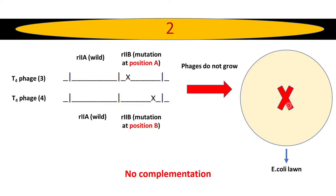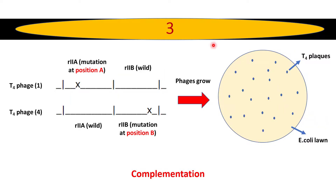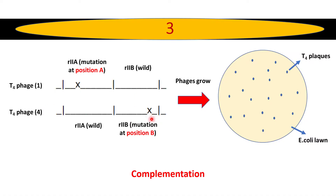In the third test, he took the same K12 strain of E. coli and infected it with two types of T4 phages again — T4 phage type 1 and T4 phage type 4. T4 phage type 1 contains a mutation in the rIIa locus, and T4 phage type 4 contains a mutation in the rIIb locus.